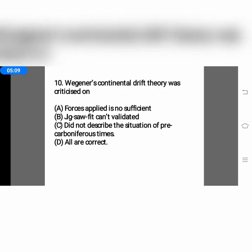Question number ten: Wegener's continental drift theory was criticized on — option A, forces applied are not sufficient; option B, evidence cannot validate it; option C, did not describe the situation of pre-Carboniferous times; or option D, all of the above. Wegener's theory was criticized on all the topics from the given options, so the correct answer is option D.